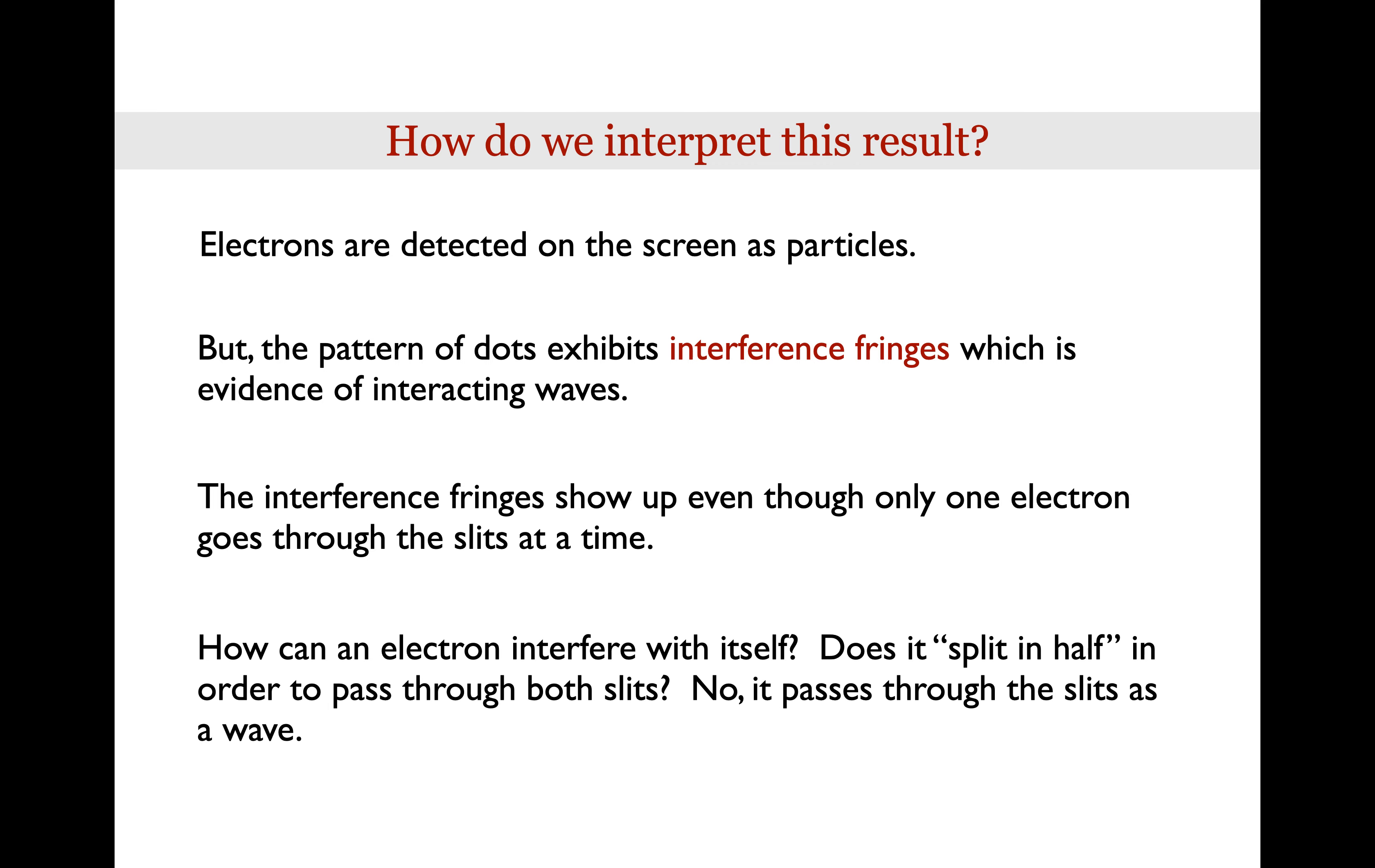So the question becomes, how can an electron interfere with itself? Does it split in half in order to pass through both slits so then it can exhibit interference pattern? Well, the answer is no. It somehow passes through the slits as a wave rather than as a particle.